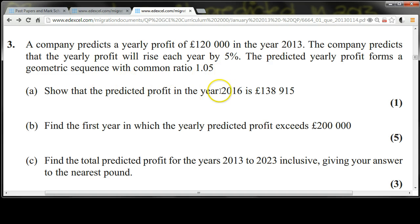Show that the predicted profit in the year 2016 is £138,915. Find the first year in which the yearly predicted profit exceeds £200,000. Find the total predicted profit for the years 2013 to 2023 inclusive, giving your answer to the nearest pound.